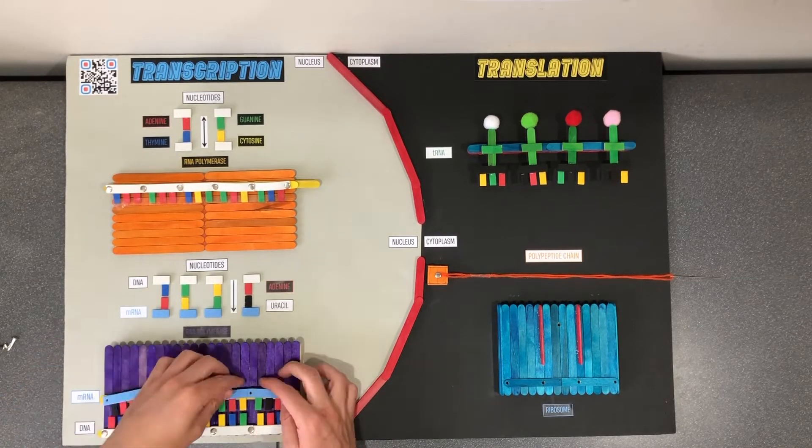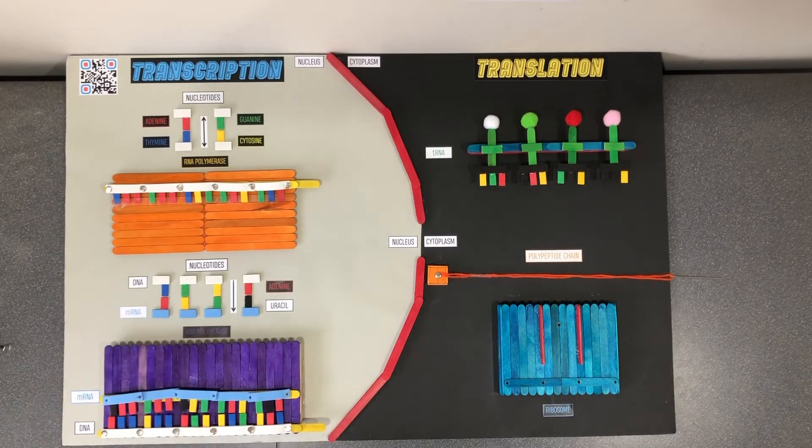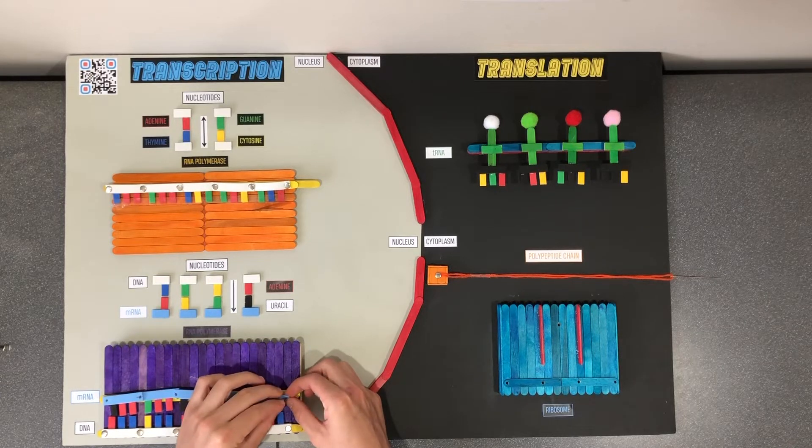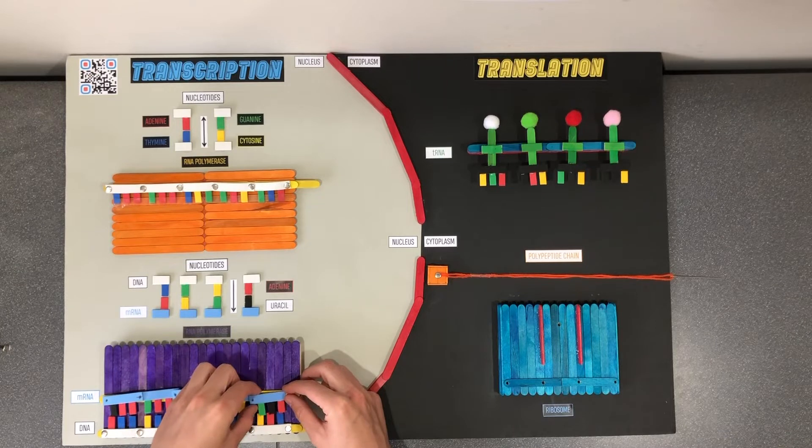Responders will use the key provided above to successfully transcribe the DNA into mRNA. The codons of the mRNA will then be joined together by the available fastener pins to compose the primary transcript of mRNA.